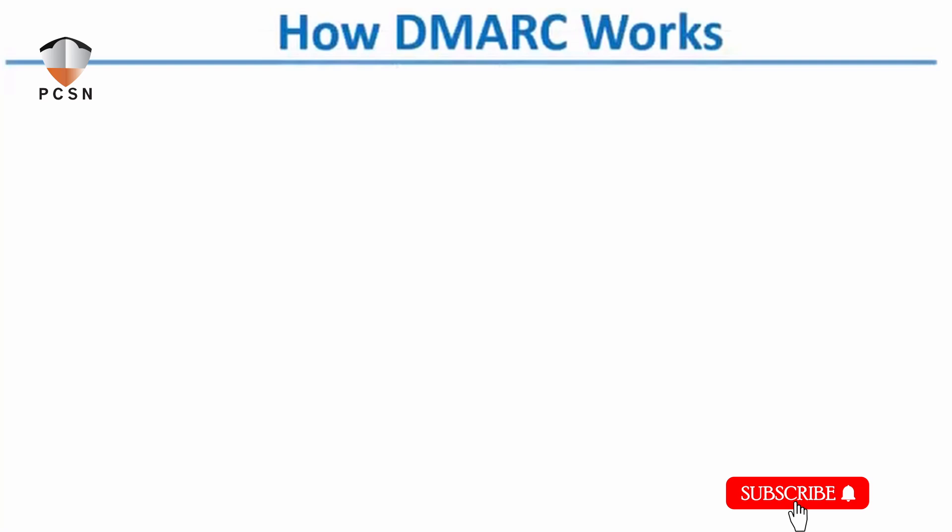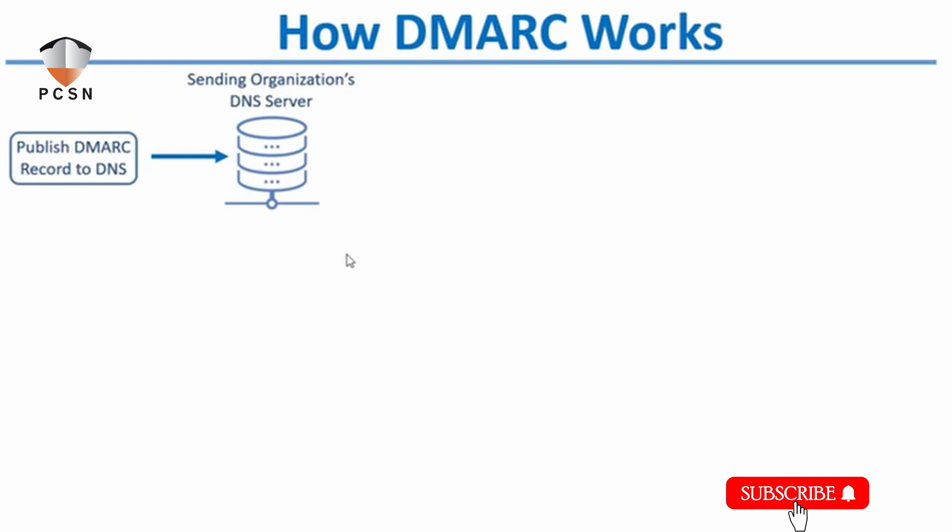Now that we've discussed DKIM and SPF, let's talk about how DMARC works. DMARC is a mechanism that ties the two together and allows domain owners to tell receiving mail servers how to handle messages that claim to come from their domain but did not align with DKIM or SPF. The sending organization publishes a DMARC record to DNS. This DMARC record explains what to do with messages that failed or were questionable — for example, quarantine the message or reject the message.